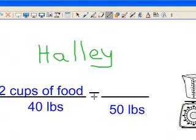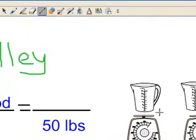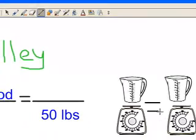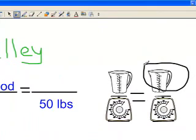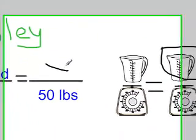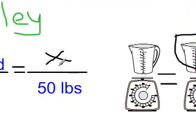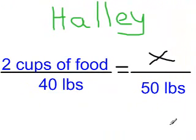So I'm going to keep my cups of food over my pounds. So my pounds is going to come down here on the bottom of this side. And that's going to be equal. So this is my unknown quantity. So I'm going to use the variable x to represent my unknown variable. I want you to see if you can solve the problem.